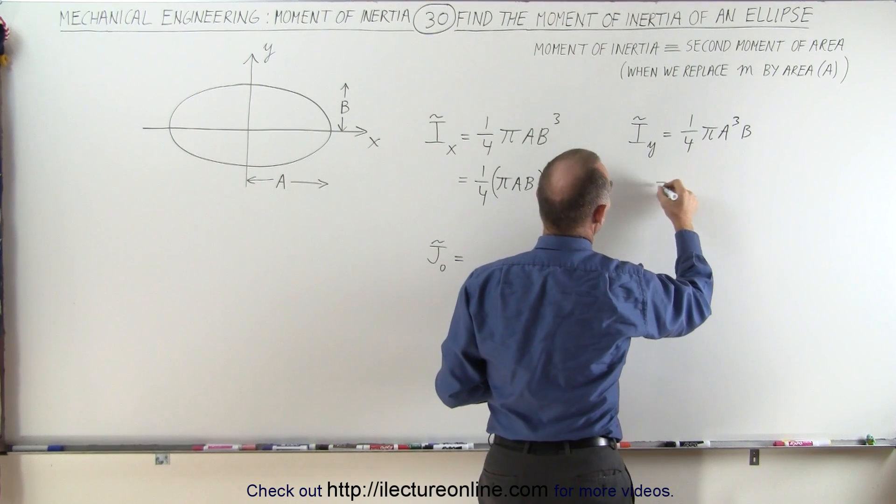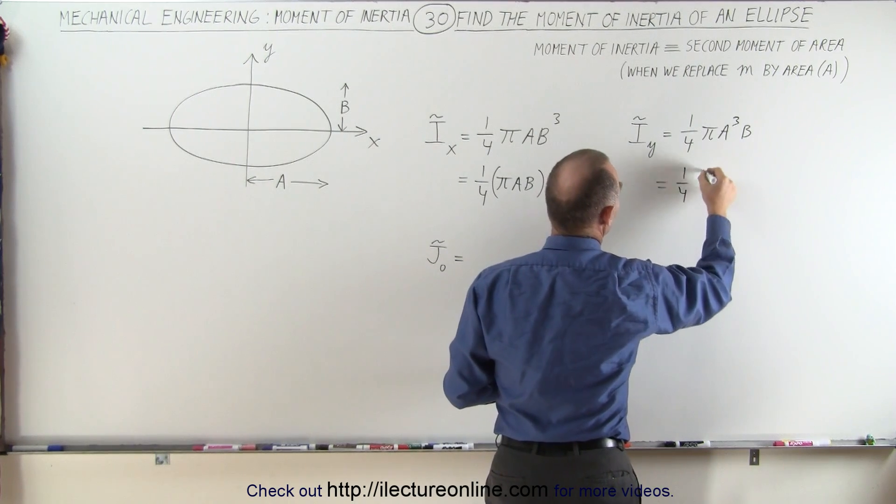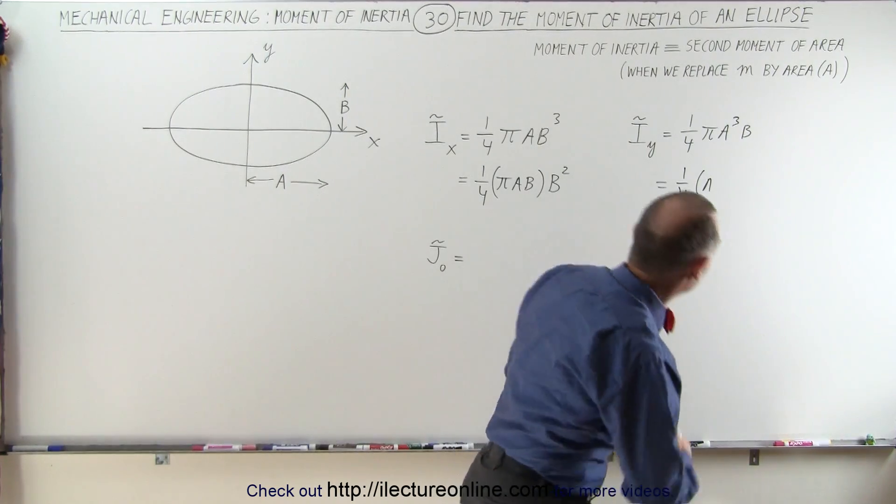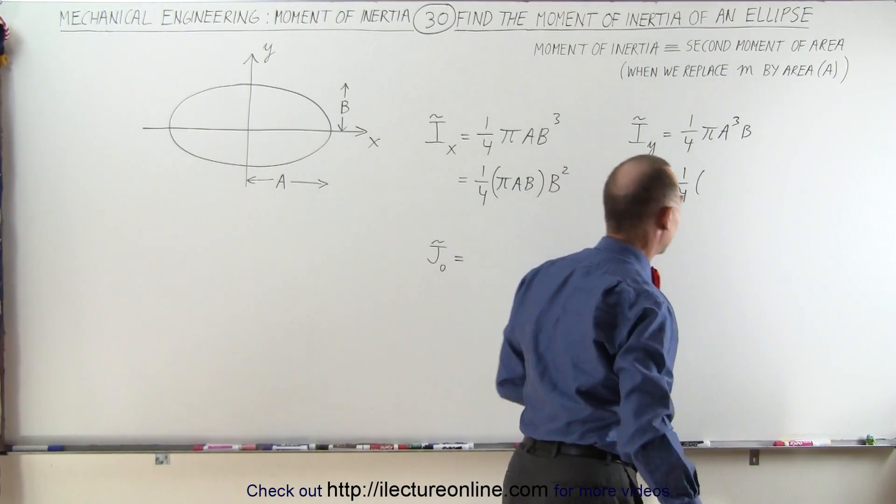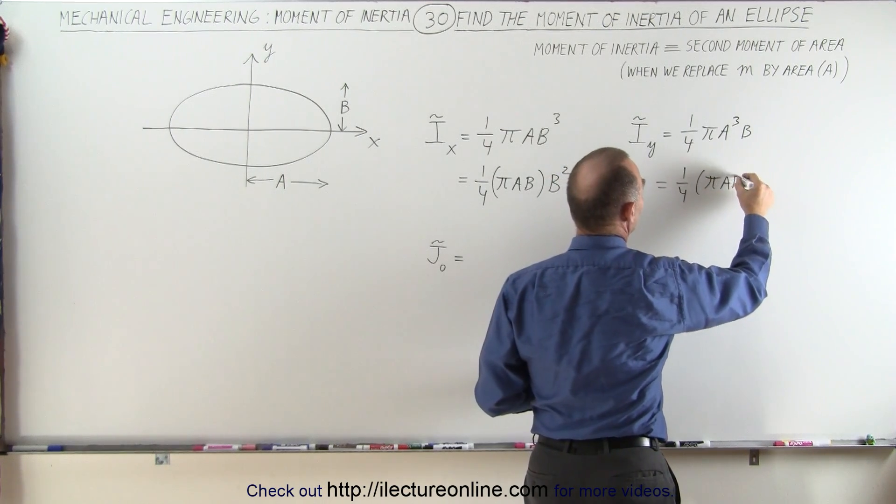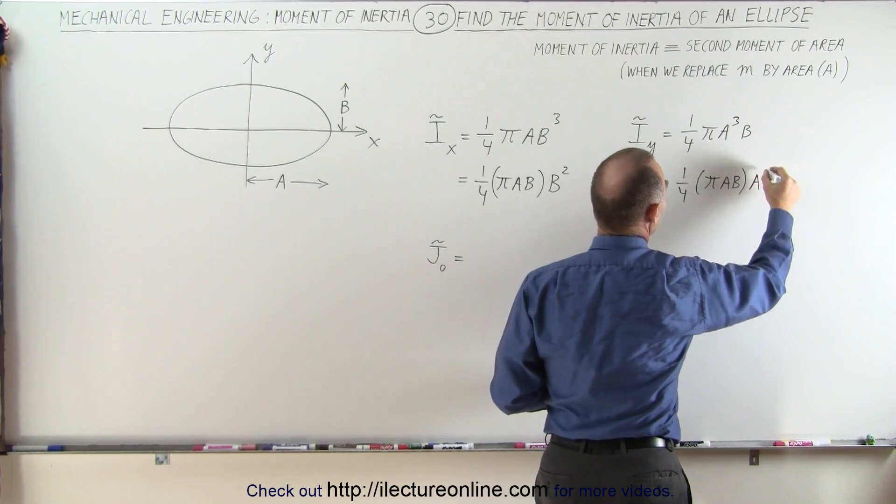Or in this case, this could be written as one-quarter times pi—oops, I've got ahead of myself. It should be pi, not a. So it would be pi a times b times a squared.